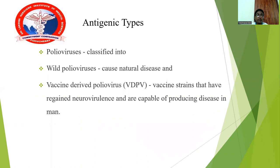Regarding the antigenic types of polioviruses, they are classified into wild polioviruses and vaccine-derived polioviruses. Wild polioviruses cause natural disease, whereas vaccine-derived polioviruses are vaccine strains that have regained their neurovirulence and are capable of producing disease in humans. There are two antigenic types.